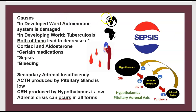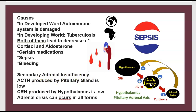In the developed world, the cause is autoimmune destruction of the adrenal gland. In the developing world, tuberculosis is the main cause. Both lead to decreased cortisol and aldosterone. Certain medications, septicemia, and bleeding can also cause the disease. In secondary adrenal insufficiency, ACTH from the anterior pituitary is low; this can also be due to low CRH produced by the hypothalamus. Adrenal crisis can occur in all forms.